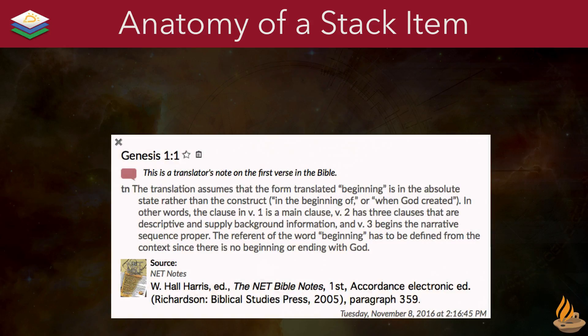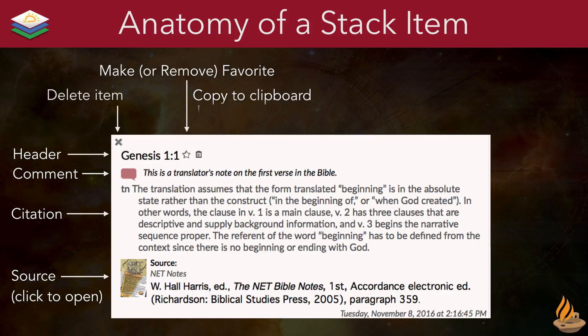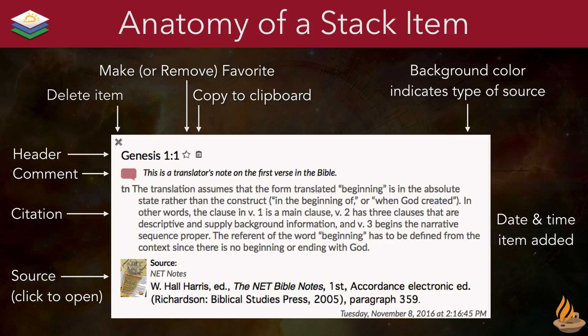Each item in a stack is packed with information. Along the side we have a header, which contains a verse reference, chapter, or article name; a place to type personal comments; the citation itself; and its source, which we can click to reopen. Along the top, there's a delete button, a place to mark an item as a favorite, and a button to copy the information — header, comment, citation, and source — to our clipboard. The background color of the stack item indicates the type of source, and the date and time the item was added to the stack is displayed at the bottom right.